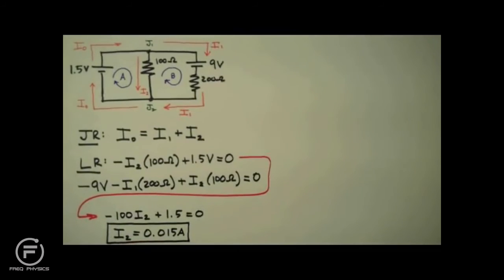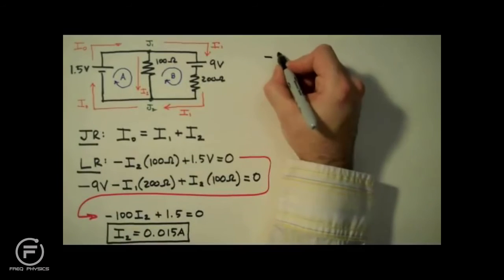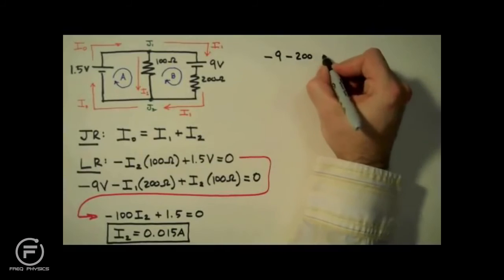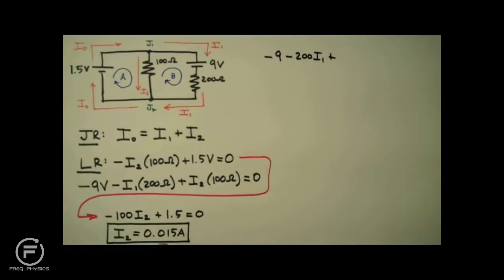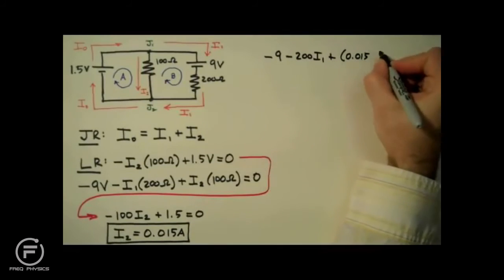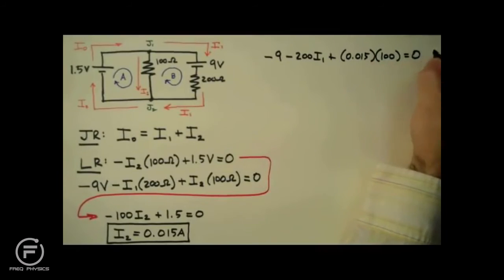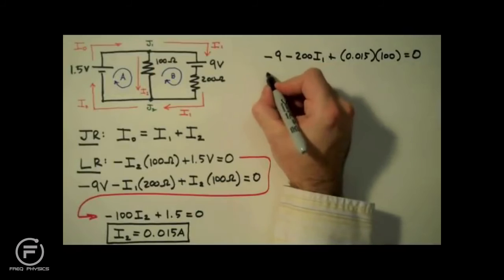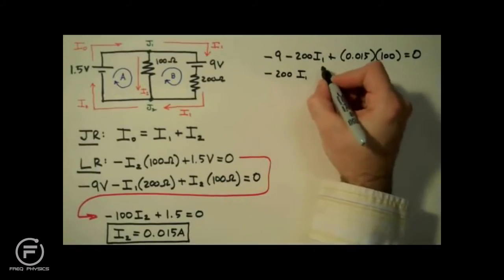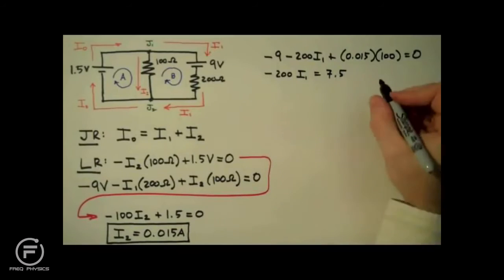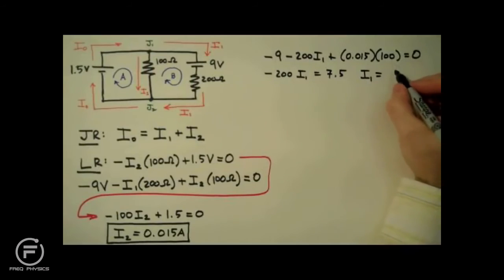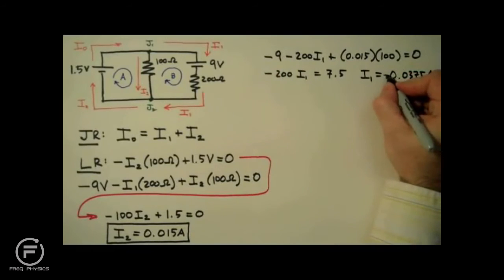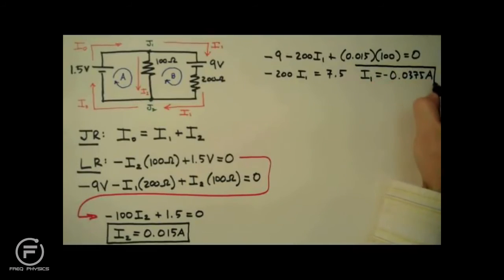Now I'm going to use this value to solve for I1 in the equation above — plugging I2 in and solving for I1, again dropping units. If you're comfortable with linear algebra, you may want to set these equations up in a matrix, as that is often a simpler way to handle the algebra. In this case I'm just going to plug and chug. This product equals 1.5 volts; moving it to the other side gives negative 200 times I1 equals positive 7.5, so I1 equals negative 0.0375 amps, or negative 37.5 milliamps.